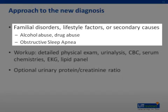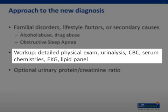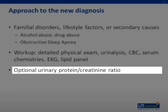Take a family history to screen for familial disorders and assess for lifestyle factors or secondary causes that could explain the hypertension. Alcohol abuse is an underappreciated cause of hypertension, and stimulant drug abuse can cause uncontrolled hypertension. Obstructive sleep apnea is now a common secondary cause that can be effectively treated with CPAP if identified early. To screen for secondary causes such as underlying renal or endocrinologic disease, all patients deserve at least a urinalysis, complete blood count, serum chemistries, EKG, and lipid panel. A urinary protein-creatinine ratio is optional but warranted in diabetic or hypertensive patients with peripheral edema to check for glomerular disease.